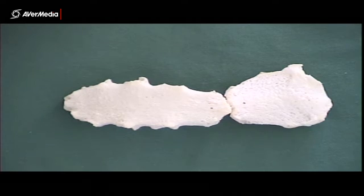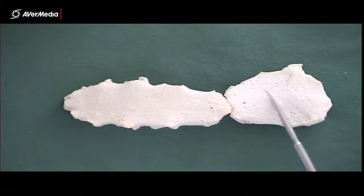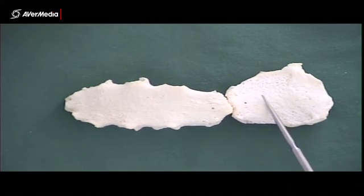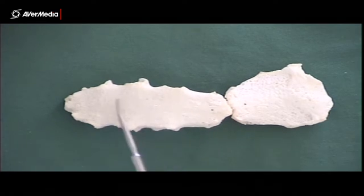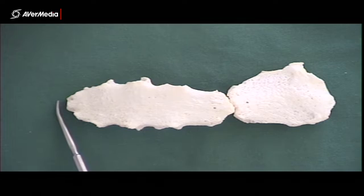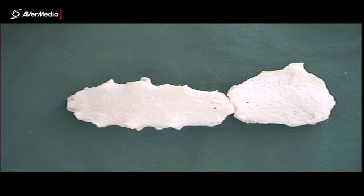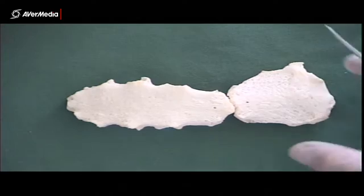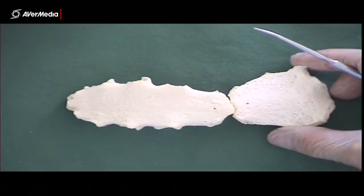Here we have the sternum, or at least two parts of it. This is the most superior part, the manubrium. Articulating with that, inferior to it, is the body of the sternum. And articulating with that inferiorly would be the xiphoid or xiphoid process, which is only quite small and not appearing on this particular specimen.